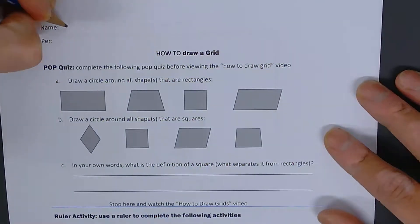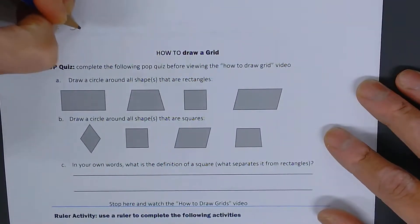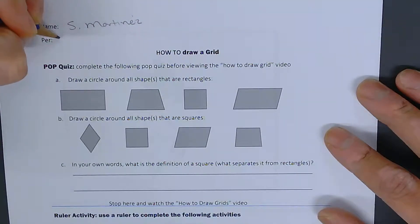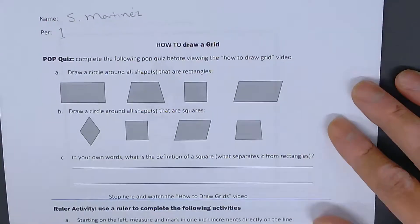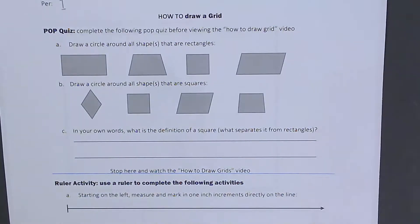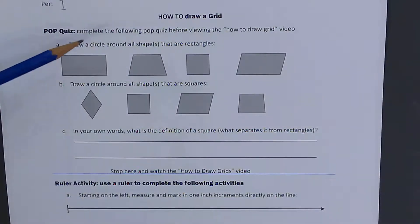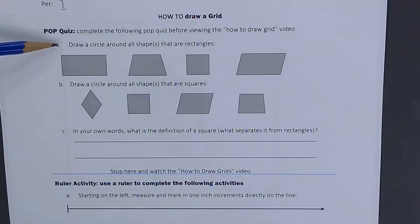If you are done with this, you should have written your name and period. Next thing you do is answer the following questions. I'm going to go over these. It's just review. So for A, it says pop quiz: complete the following pop quiz before reviewing the how to grid video. Draw a circle around all the shapes that are rectangles.